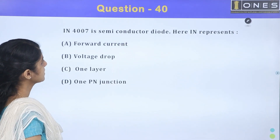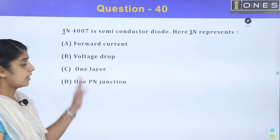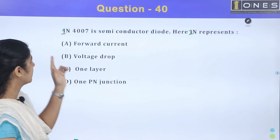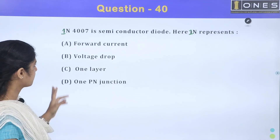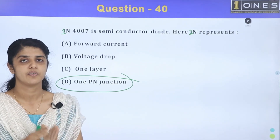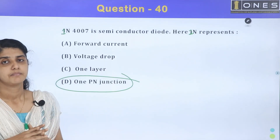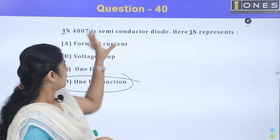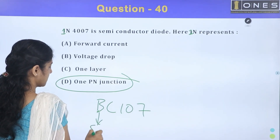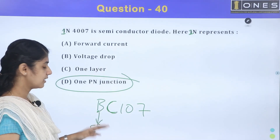Next question: 1N4007 is a semiconductor diode. Here, 1N represents a 1-junction diode. 2N represents devices with 2 junctions, such as transistors — for example BC107. This transistor is made of silicon and operates in the audio or high frequency range.